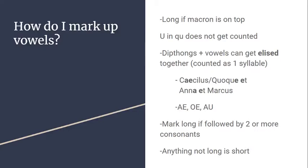We need to cover one last thing: how to mark up the vowels. You don't randomly assign spondee and dactyl — there are ways to tell. If there's a macron on top of a vowel, you know it will be long. Also, the U in QU does not get counted, so in a word like 'que,' you mark only the E. Diphthongs are two vowels next to each other, like AE, and vowels at the end of one word and the beginning of another can be elided together, counted as one syllable.